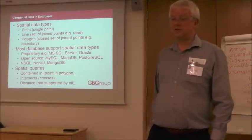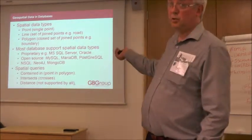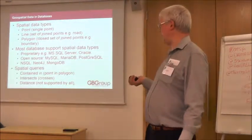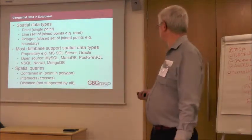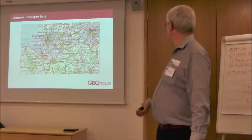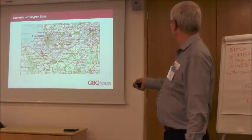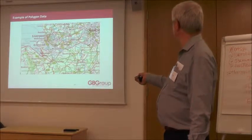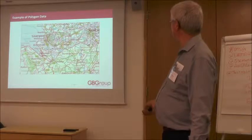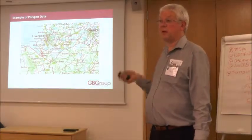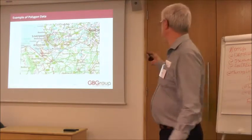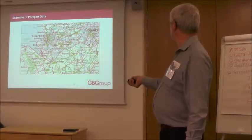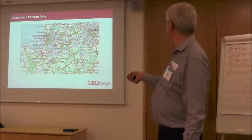Distance is another spatial query. That's how far something is from something else — where's my nearest? Here's an example: these are local authority district boundaries from Ordnance Survey open data — you can also get them from ONS. So you've got two sources of the same thing. That is stored as a polygon — that's Cheshire West and Chester, our local authority. There's Wirral, there's City of Liverpool.